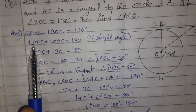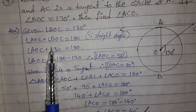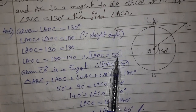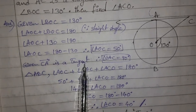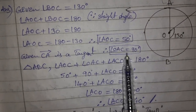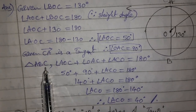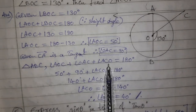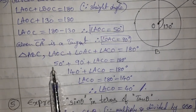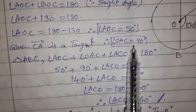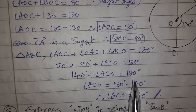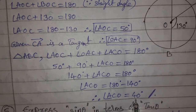AOC and BOC are on a straight line, so angle AOC + angle BOC = 180°. BOC = 130°, so angle AOC = 50°. Since CA is a tangent, angle OAC = 90°. In triangle AOC: AOC + OAC + ACO = 180°, so 50 + 90 + ACO = 180, giving angle ACO = 40 degrees.